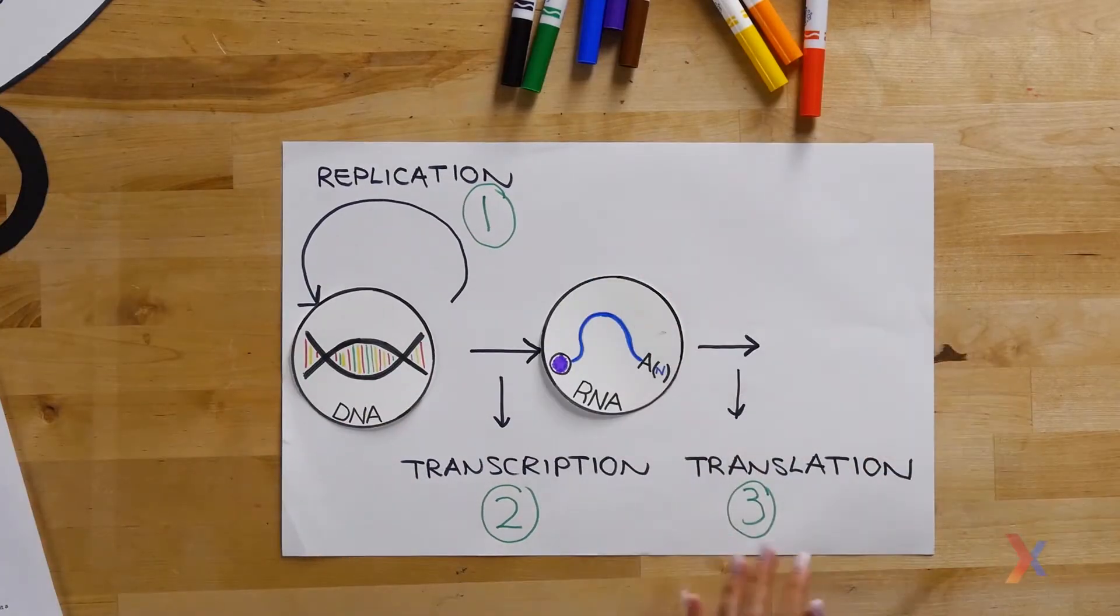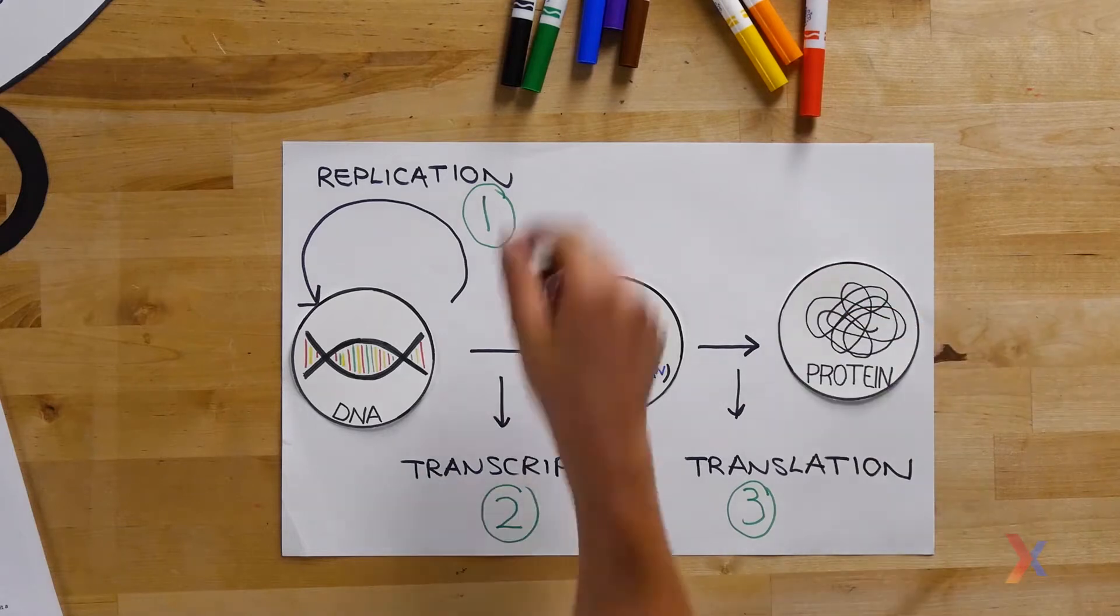But first, it's worth noting that all living systems use a conserved process known as the central dogma to produce the functional units of life. The three main components of the central dogma are DNA, RNA, and protein.